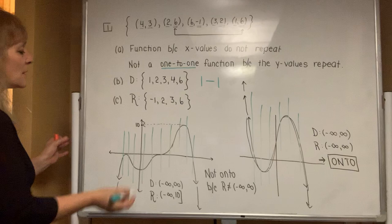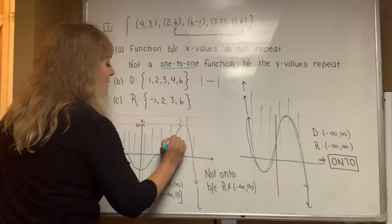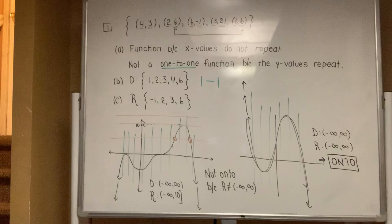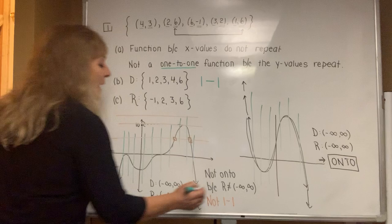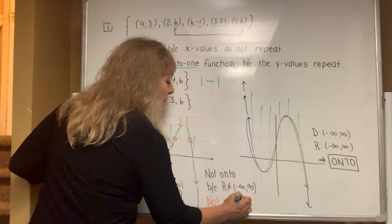This function is not one-to-one. Because if you notice, there was a horizontal line that actually intercepted more than once. So this picture is not only not onto, it's not even one-to-one. And it's because it doesn't pass the horizontal line test.